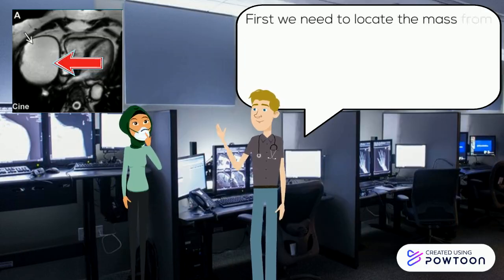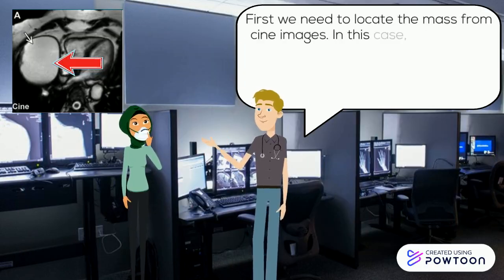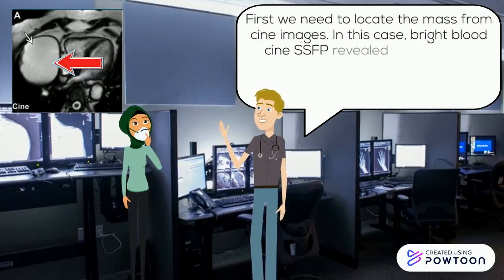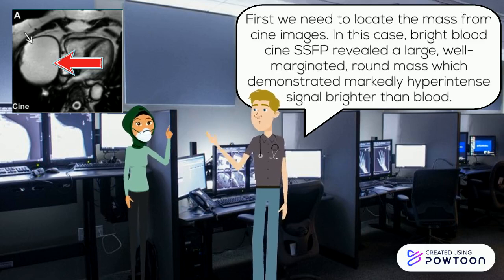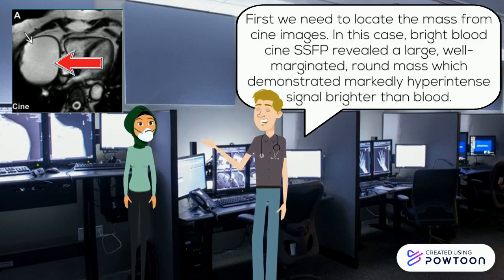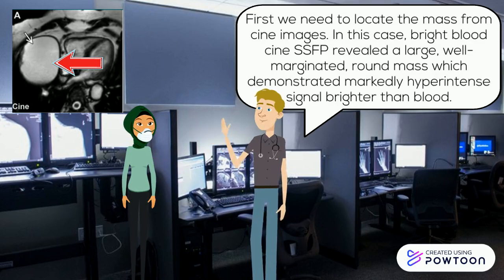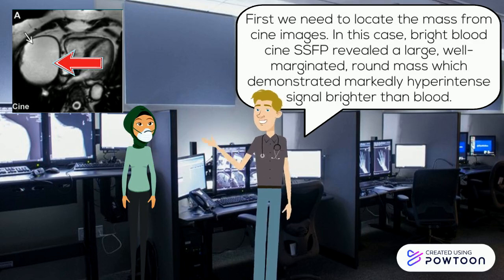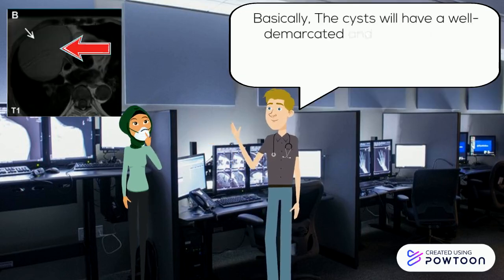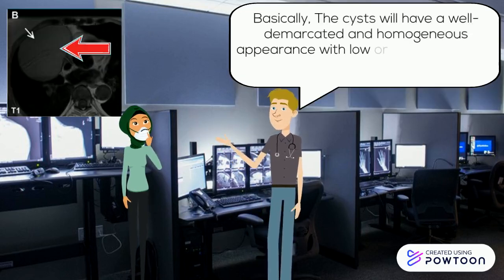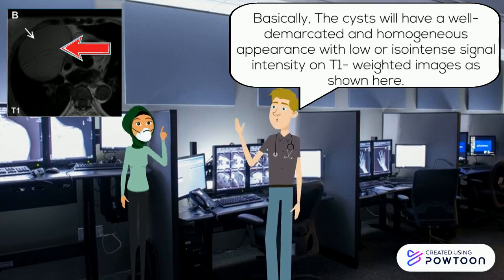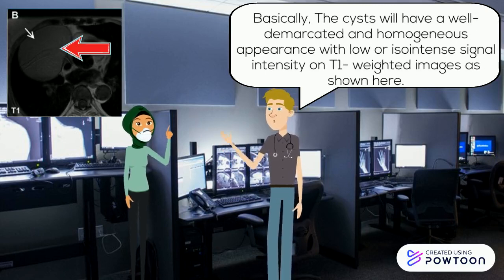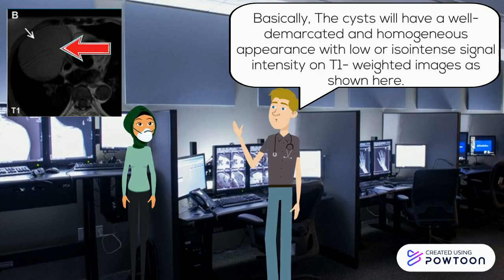First, we need to locate the mass from cine images. In this case, bright blood cine SSFP revealed a large, well-marginated, round mass which demonstrated markedly hyper-intense signal brighter than blood. Basically, cysts will have a well-demarcated and homogeneous appearance with low or iso-intense signal intensity on T1-weighted images, as shown here.